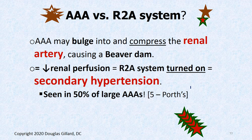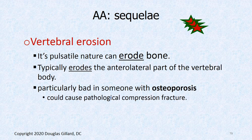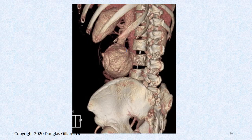AAA versus the renin-angiotensin-aldosterone system: an abdominal aortic aneurysm in the right spot can pinch the renal artery and cause ischemia to the kidney, turning on the RAAS system — causing secondary hypertension. Other sequelae: it could pinch the ureters and create a beaver dam backing up pressure into the kidney; it could compress the superior or inferior mesenteric arteries and you could lose your bowel. It can also cause vertebral erosion — these arteries are pulsatile and can erode bone, as shown in this case with a gigantic aneurysm.